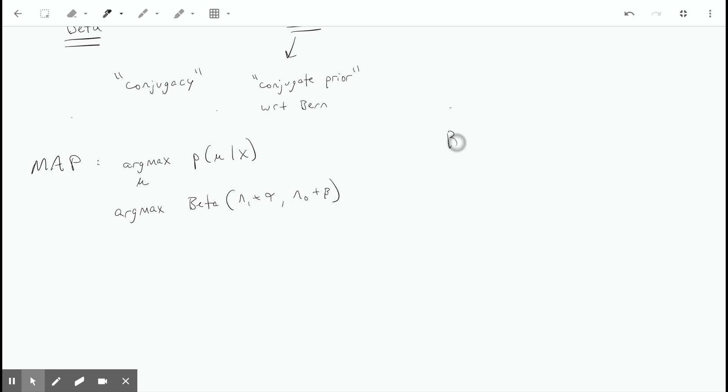From statistics, we can recall the formula for the mode of a beta distribution, which is x minus 1 over x plus y minus 2. We can just plug in, so the MAP - remember this is our value of mu - equals n1 plus alpha over n1 plus alpha plus n0 plus beta minus 2.